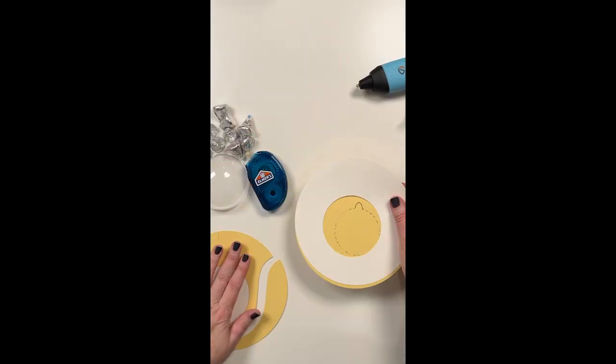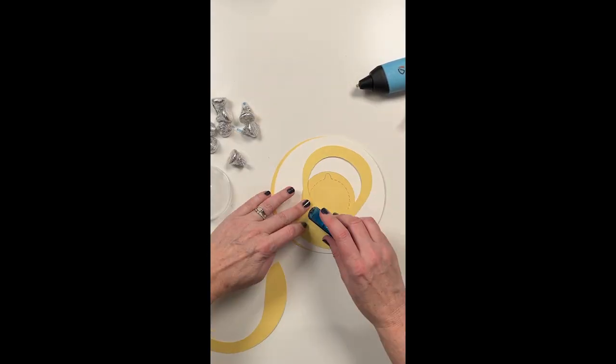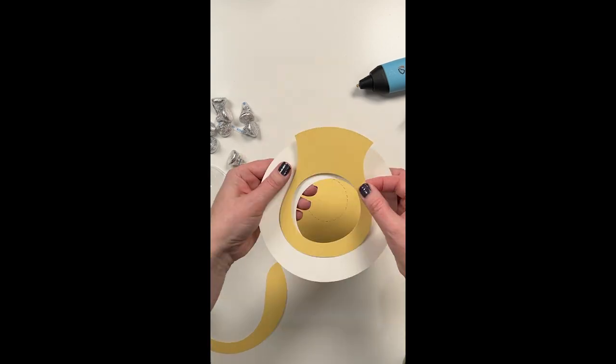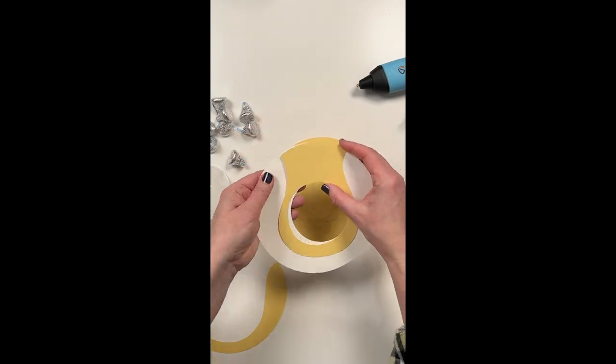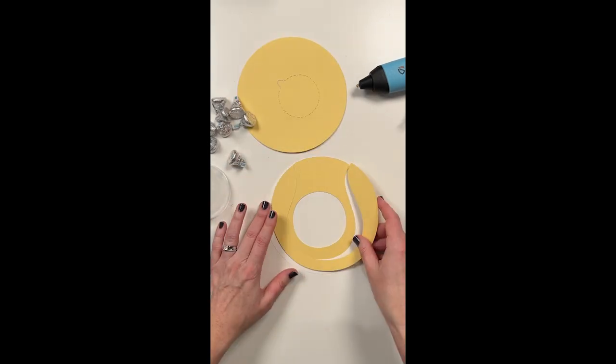After you cut the paper with your Cricut or Silhouette, you're going to glue the pieces together. First, glue the top yellow on top of the white so it looks like a tennis ball,